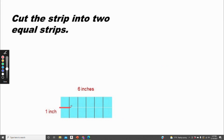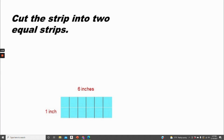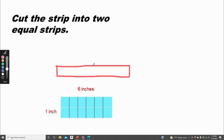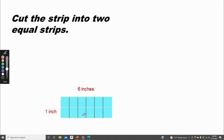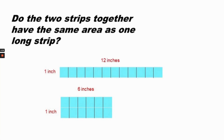You can see by this line in the middle that I've cut the strip into two equal strips, and then placed one strip on top of the other. I started with a 12-inch strip, cut it into two strips, and stacked them. Each strip is one inch by six inches — equal strips. So do these two strips together have the same area as one long strip? Of course, because they both have 12 square inches.